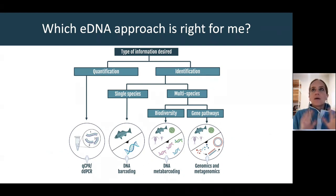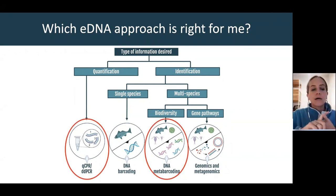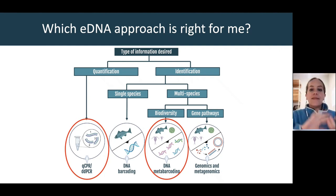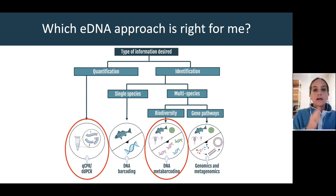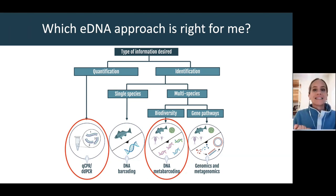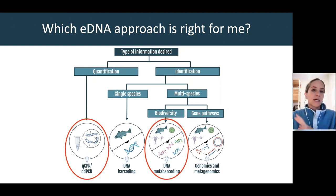When we think about which technologies are most often used in these two different approaches, it's primarily quantitative PCR or digital PCR for quantification of target taxa, and then DNA metabarcode sequencing that we're often using for identifying multiple taxa present in the environment for biodiversity surveys. You'll primarily be hearing me talk about either quantitative measures using qPCR or digital PCR, or DNA metabarcode sequencing — also referred to as high-throughput sequencing — for getting a whole snapshot of a community.